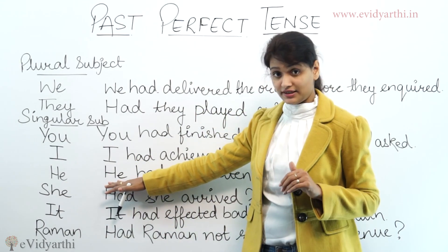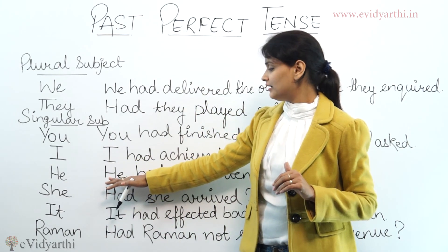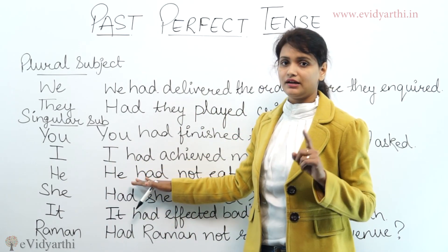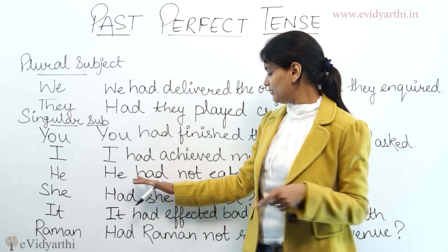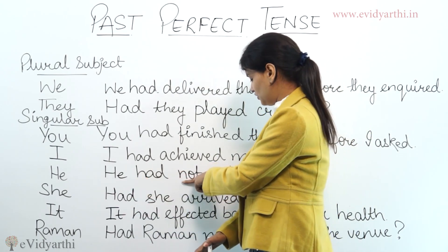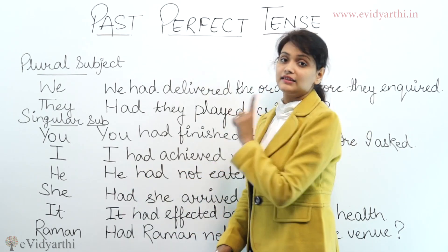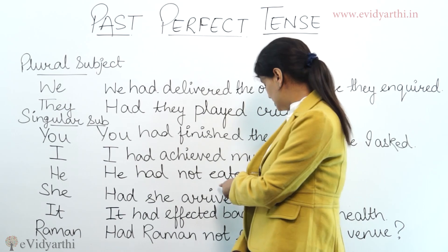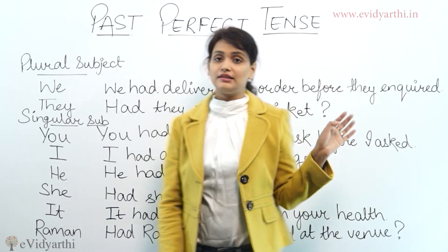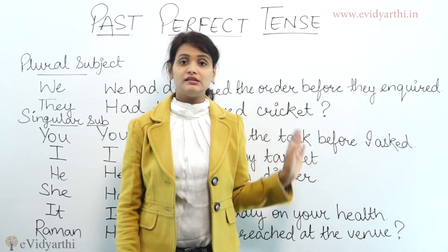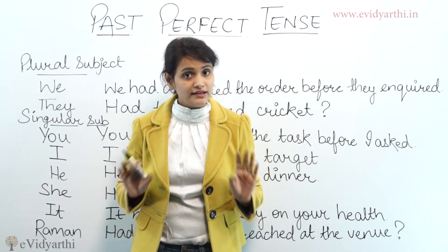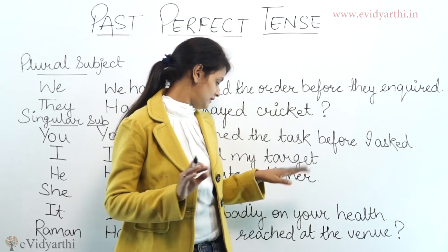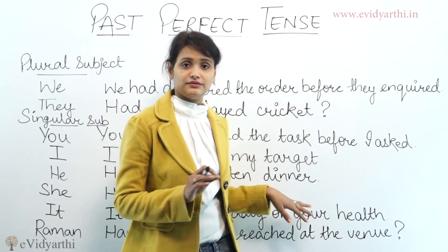Now let's form a negative sentence. With 'he' as the subject, the helping verb 'had' is used, and we add 'not' after it. 'He had not eaten dinner.' This means he had not eaten his dinner. That is how we form a negative sentence in past perfect tense.